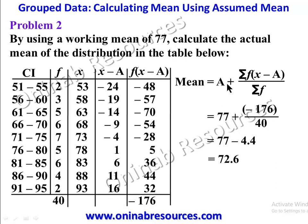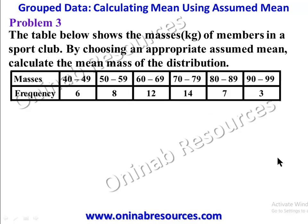In Problem 2, the assumed mean was taken above the actual mean, so the deviations were negative. For Problem 3, we should not choose an assumed mean from the extreme ends of the distribution. Choosing between 40 and 49 would give large positive deviations, and choosing between 90 and 99 would give large negative deviations. Therefore we should select our assumed mean from within the 60–79 range.